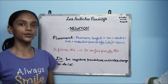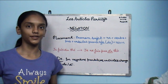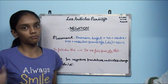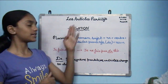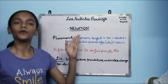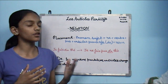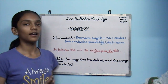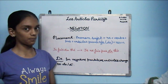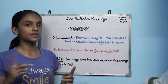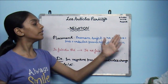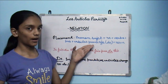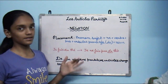Now I'll tell you how to do the negation of article partitif. First, let's look at the placement. In article partitif, first we place the pronom sujet — je, tu, nous, etc. Then we place ne. In negation, we always introduce ne and pas. The ne and pas wrap around the verb. So first ne, then the verb, then pas, then the article partitif, then the noun.